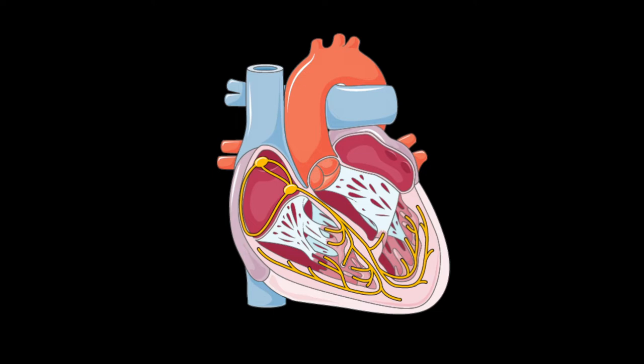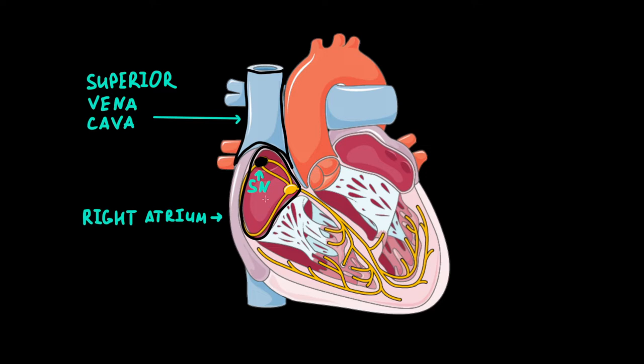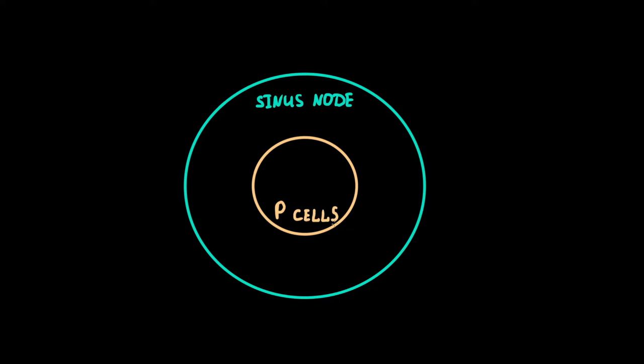Let's quickly remind how the sinus node works. The sinus node is located within the right atrium, near the opening of the superior vena cava. The sinus node consists of two types of cells. The first type is pacemaker cells, or P-cells, which are located in the central region of the anatomical node. It is a cluster of synchronous pacemaker cells responsible for initiating the automatic sinus impulses that propagate out of the node into atrial tissue.